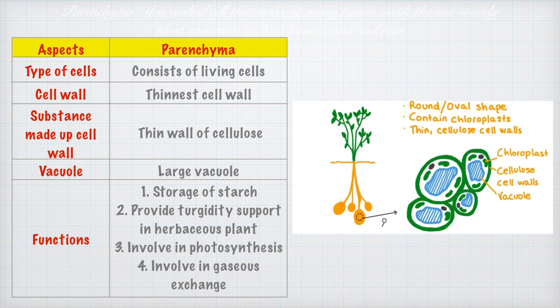The functions of parenchyma tissue: first, it is a storage of starch — as we just saw, we can find it in potato. Second, parenchyma tissue can provide turgid support for herbaceous plants, which is why the vacuole is large in size. Third, parenchyma tissue is involved in photosynthesis and also in gas exchange.